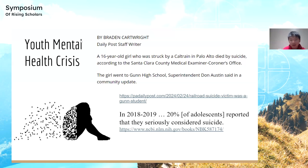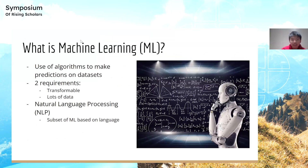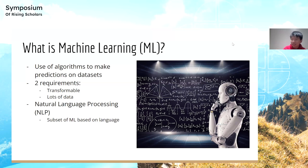So what exactly is machine learning? I'd like to define it as the use of algorithms to make predictions on data sets. Machine learning has two requirements: first, you have to be able to convert your subject into numbers or data, and second, you generally need lots of it, because machine learning models learn best through patterns — a single data point probably won't be enough.